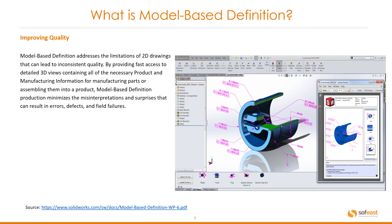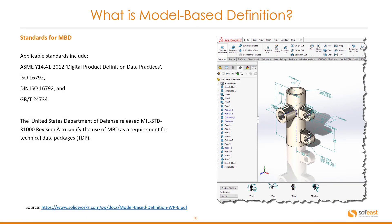Model based definition addresses the limitations of 2D drawings that lead to inconsistent quality, by providing fast access to detailed 3D views containing all necessary product and manufacturing information for manufacturing or assembling parts. MBD production minimises the misinterpretations and surprises that can result in errors, defects, and field failures.